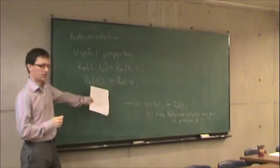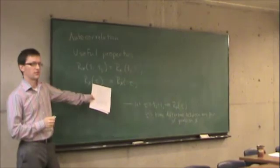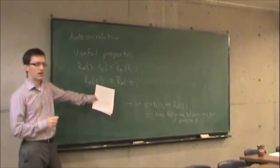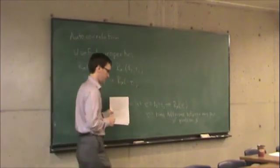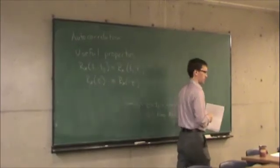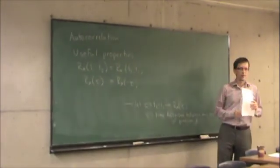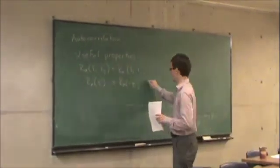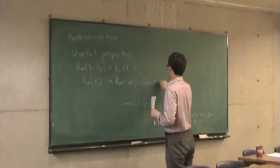And functions with this property are called what? Symmetric? Symmetric. It's symmetric, but there's also a particular name that I'm looking for. Even. Even. Even function. So Rx of tau is even.